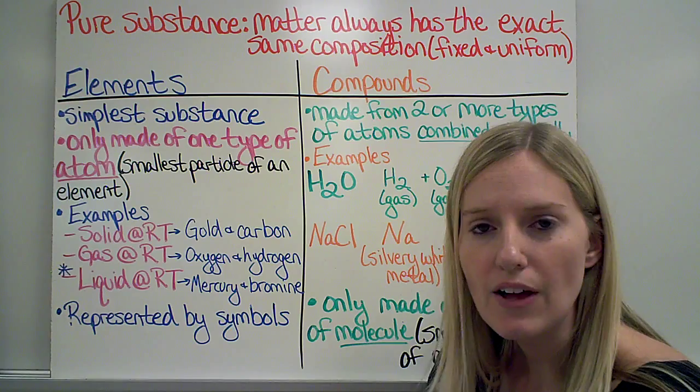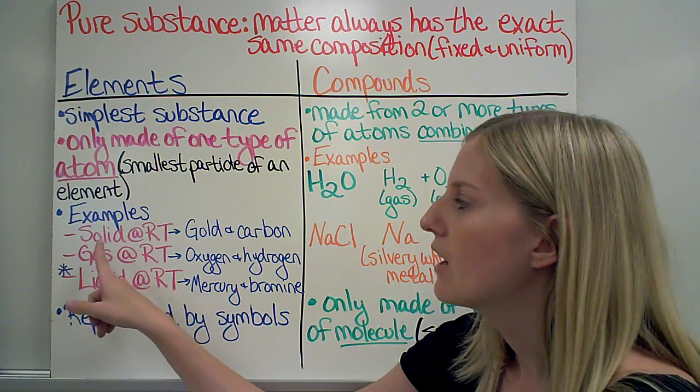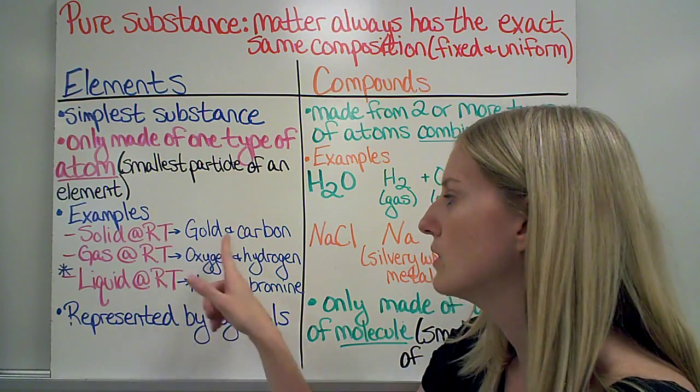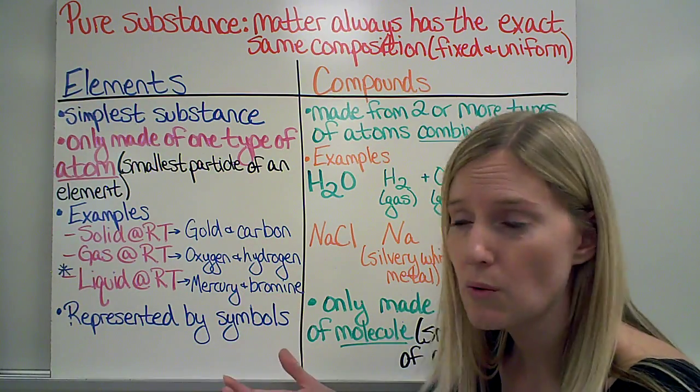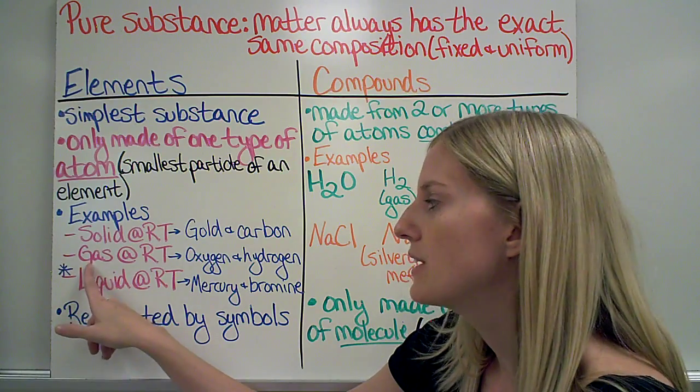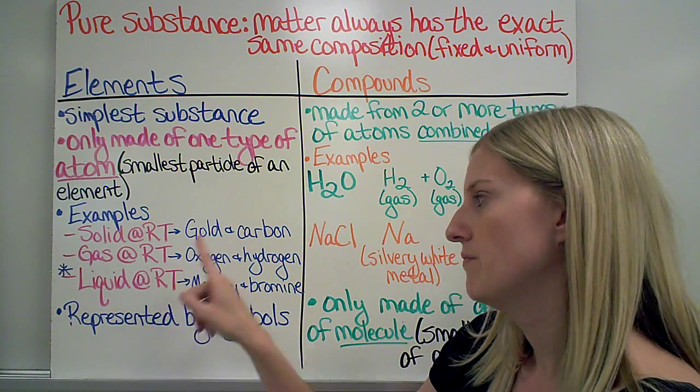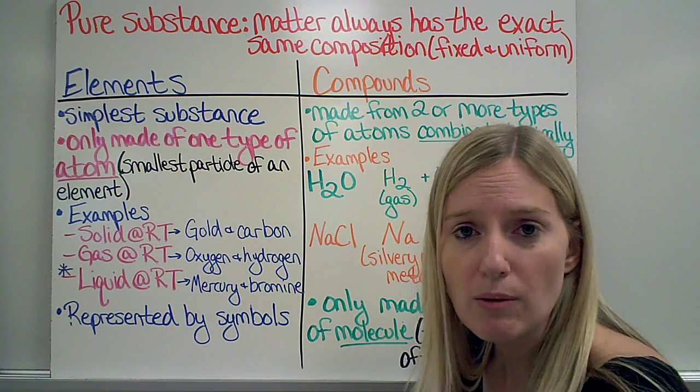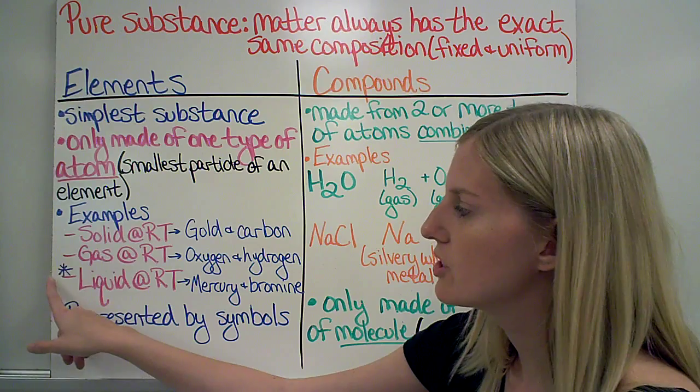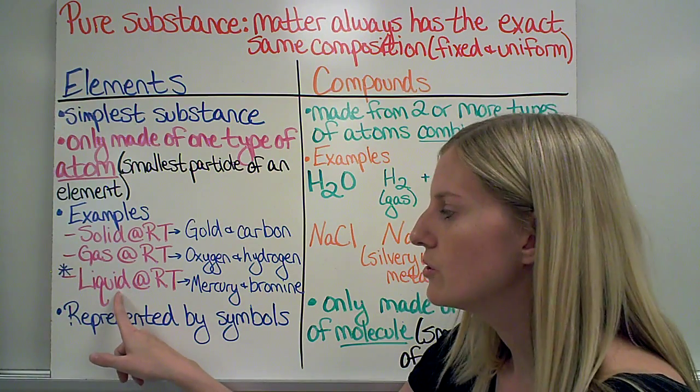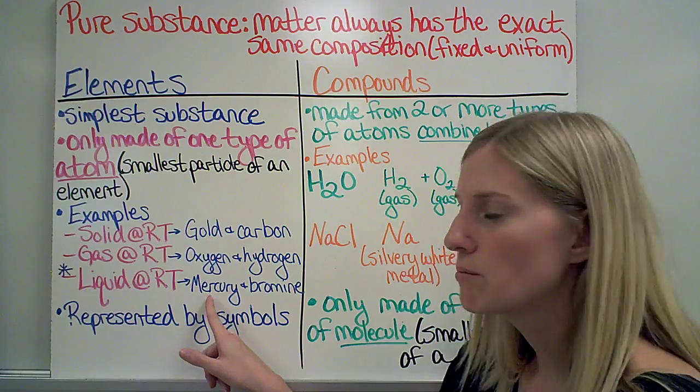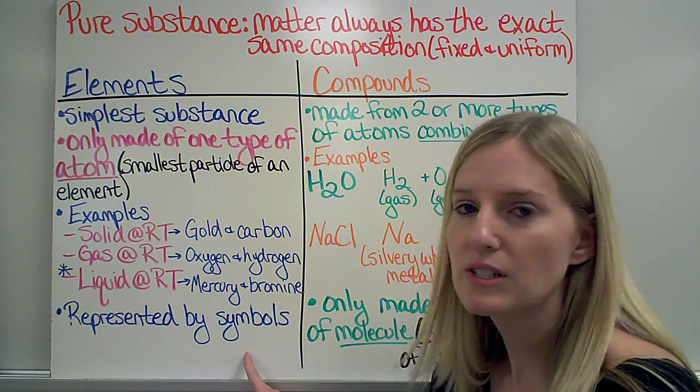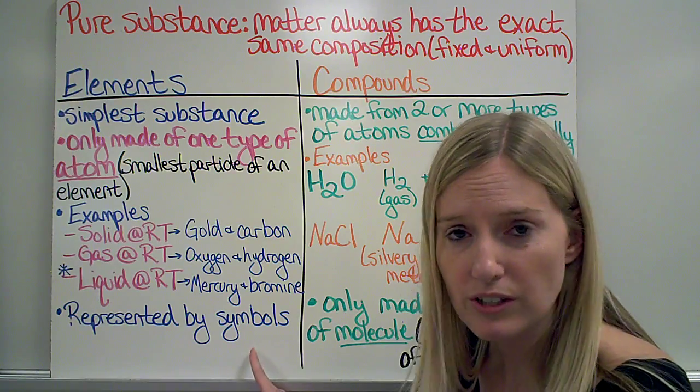So some examples of elements are, some of them are solids at room temperature, such as gold and carbon. There are many others as well. There are also gases at room temperature, such as hydrogen or oxygen and hydrogen. There are other gases at room temperature also. This one has a star by it. The only two elements that are liquids at room temperature are mercury and bromine. We represent these elements with symbols, which we will need to memorize.